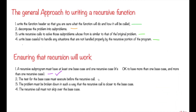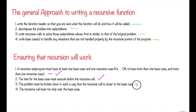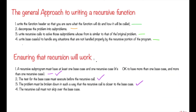The third step is that the problem must be broken down such that the recursive call moves closer to the base case. Here the problem moves towards n=1, which is the base case. The fourth step is that the recursive call must not skip over the base case — we must write the base case before the recursive call, because if the base case is below the recursive call there is no termination point and the recursion will go infinitely.